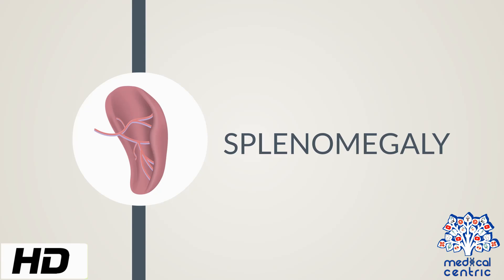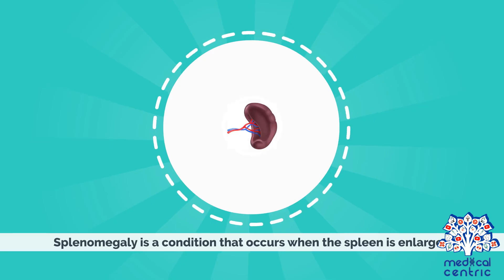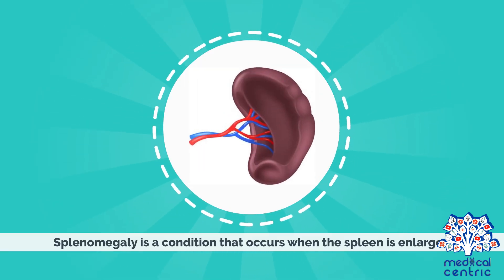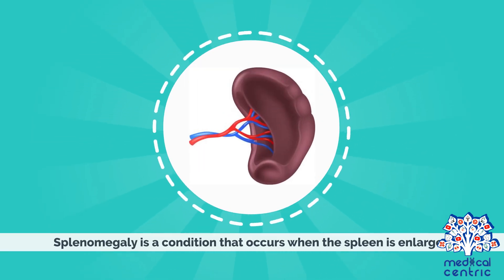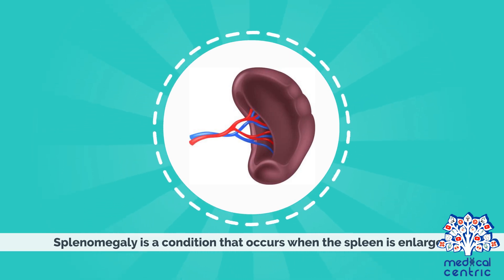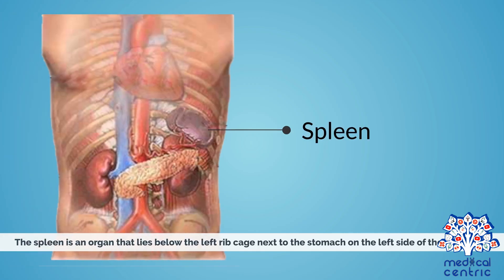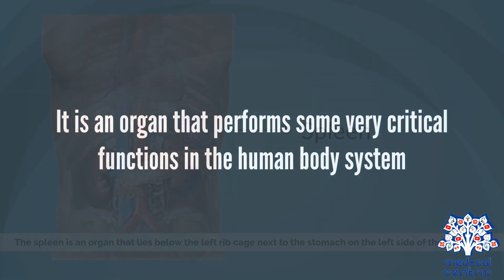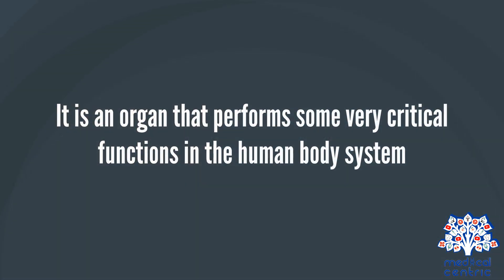Today's topic is splenomegaly, a condition that occurs when the spleen is enlarged. The spleen is an organ that lies below the left ribcage, next to the stomach on the left side of the abdomen. It is an organ that performs some very critical functions in the human body's system.